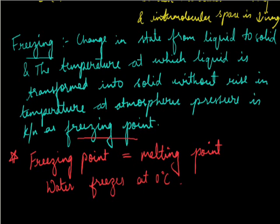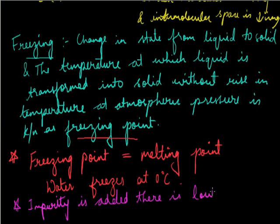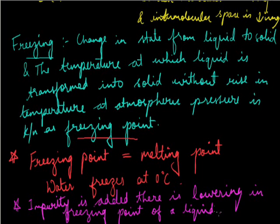Regarding the addition of impurity in this case, when impurity is added, the same principle applies. All the examples we considered for melting point can be reversed — addition of impurity similarly lowers the freezing point of a substance.